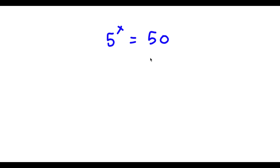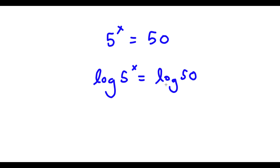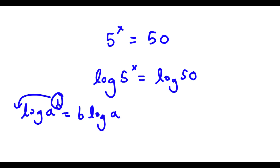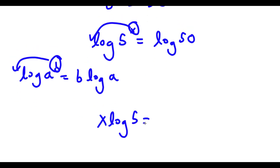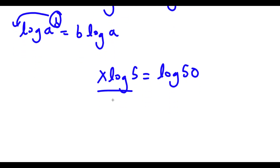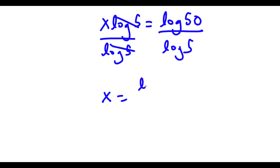Alright, so now I have 5 to the power of x is equal to 50. The first thing I'm going to do is take the log on both sides: log 5 to the power of x is equal to log 50. Using the logarithm property, I move the exponent x to the front, giving x times log 5 is equal to log 50. Then I divide both sides by log 5, leaving x is equal to log 50 over log 5.